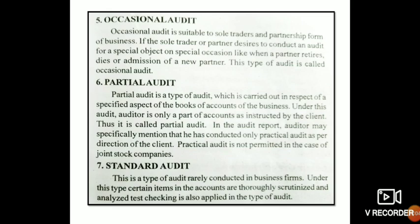The next type is Partial Audit. In a partial audit, only a specific part of the accounts is audited — for example, only the purchase department or only production-related items. You can audit a particular department or particular items rather than the full accounts.